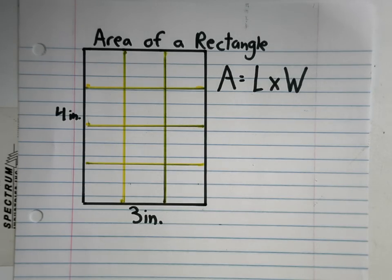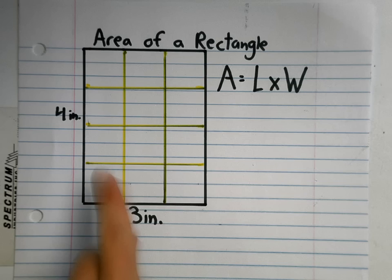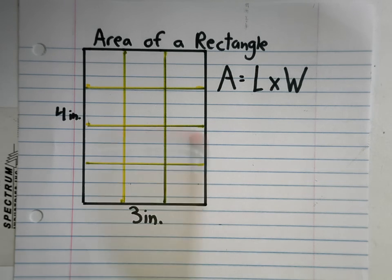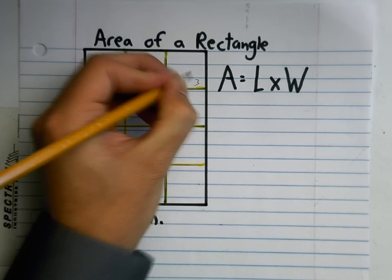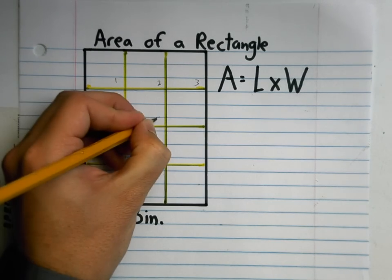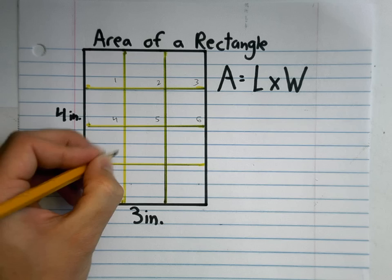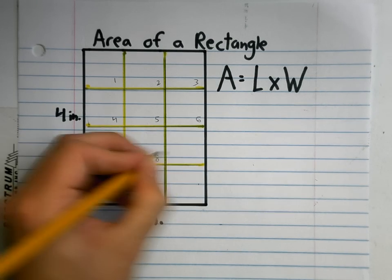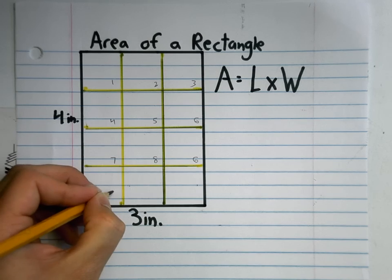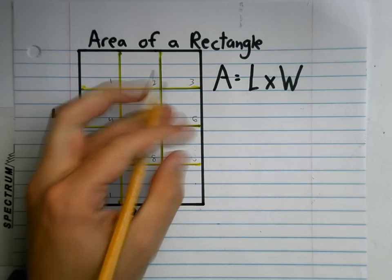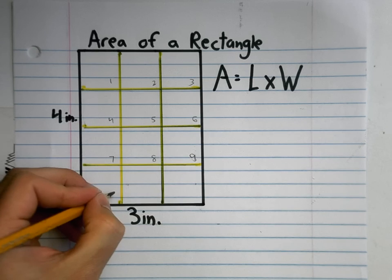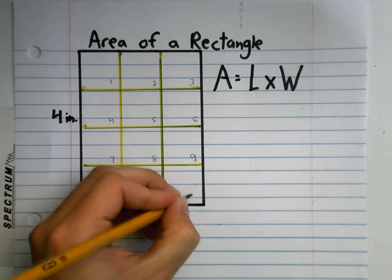And then look, I can go through and I can count to see how many square inches I have. I have one, two, three, four, five, six, seven, eight, nine - oops, I made that a six again. What was I thinking? Nine, ten, eleven, and twelve.